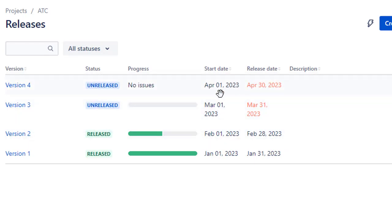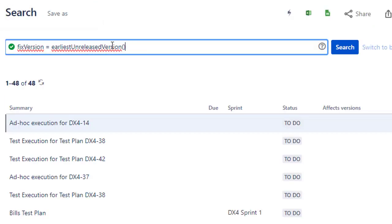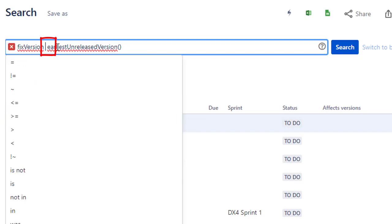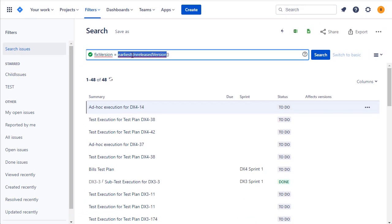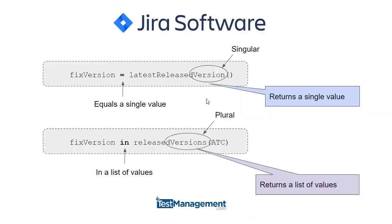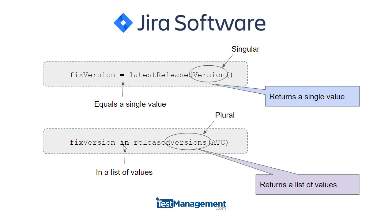Something worth noting is the difference between equals and the IN statement. Which one you use is determined by what these functions return. latestReleasedVersion is singular — it returns one version, so we use equals. releasedVersions is plural — it returns a list, so we use the IN clause instead.